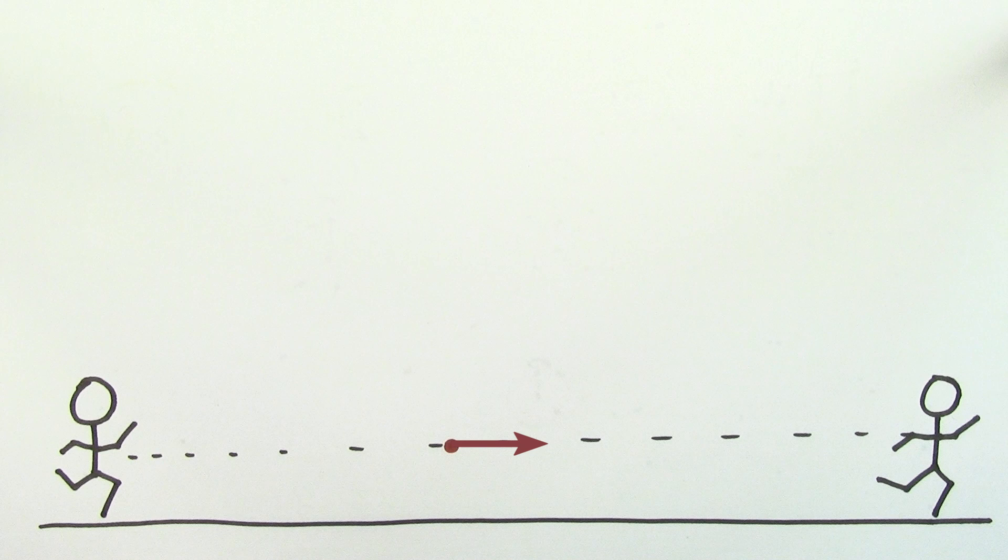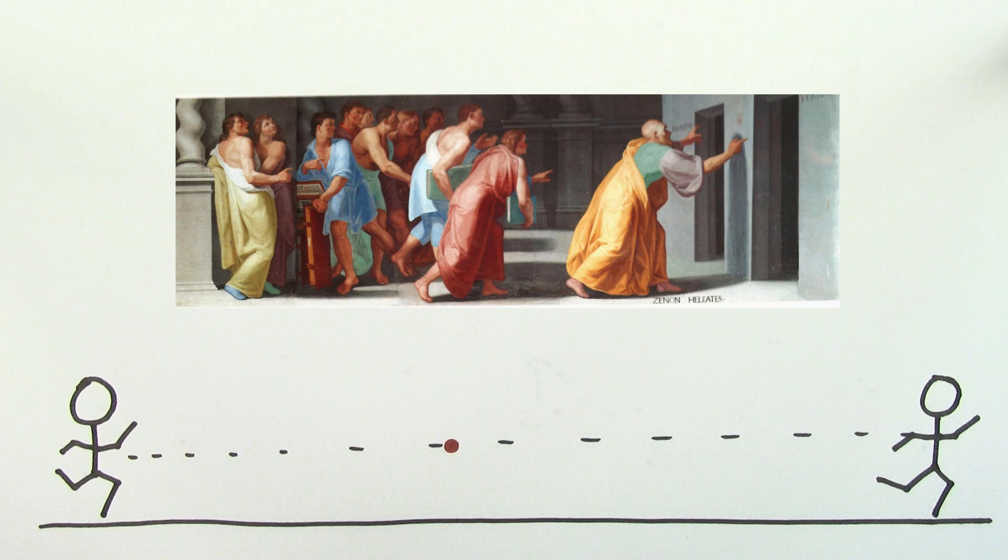In fact, since defining motion at a particular point in time seemed impossible, it made some ancient Greeks question whether motion had any meaning at all. They wondered whether motion was just an illusion.